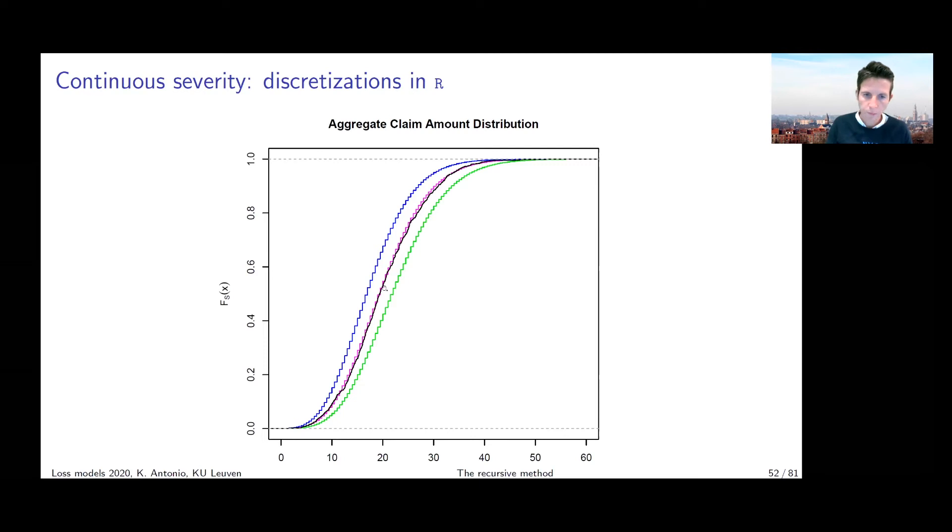The one in blue is now referring to the CDF of S, but it's the CDF that I obtained via simulation. So if you think about how to construct a simulated value for this random variable S, then you would first have to generate the number of terms in the sum from a Poisson distribution with parameter lambda = 10 in this example.